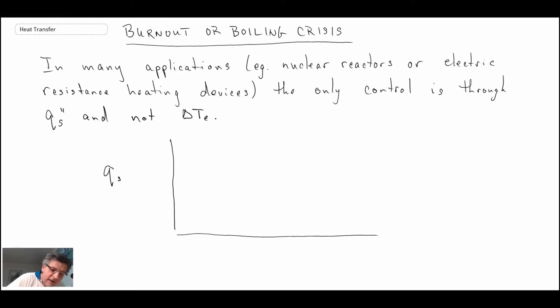We have QS double prime, and then we have our excess temperature down on the horizontal axis. We came up, we hit the onset of nucleate boiling, we come up and through, we go through the critical heat flux, we come down to the Leidenfrost, and then we go up into the film regime.